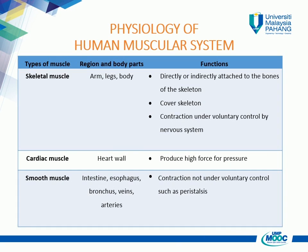Most of the muscle in the body is skeletal muscle. There are around 640 skeletal muscles, and they make up about half the weight of your body. Skeletal muscle is strong but cannot keep working for long periods of time. Athletes have to train so that their skeletal muscles will work for longer.